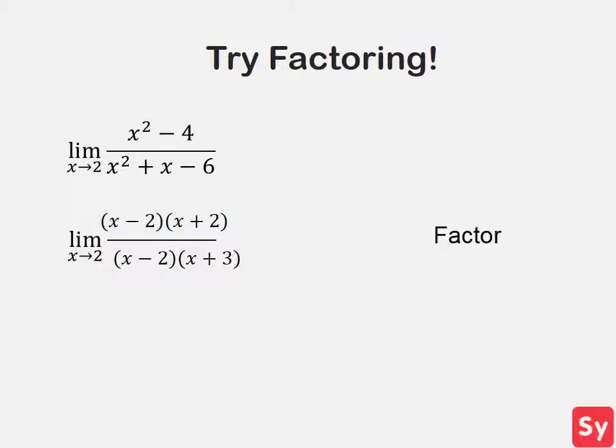We can see that there is a common factor, x minus 2, so we'll go ahead and cancel that out. That will simplify the function to x plus 2 over x plus 3.